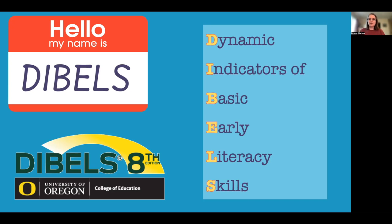It's a set of procedures and measures for assessing the acquisition of literacy skills — the foundation skills that we need for children to be strong readers, specifically looking at the skills that build reading. They also have a spelling screener. It's been developed and researched by the University of Oregon for many years — not a new assessment, new to our shores in Aotearoa but not new at all. We're up to the eighth edition, released in 2021.